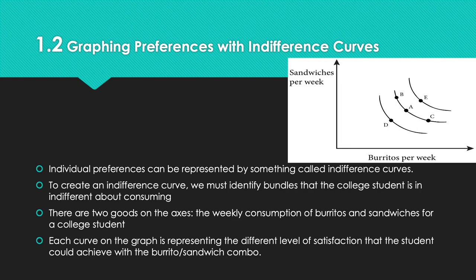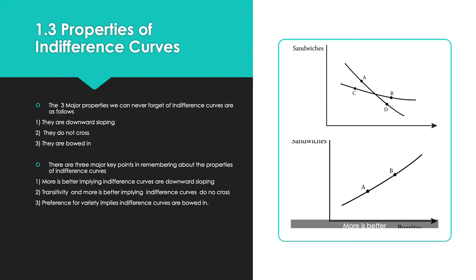Section 1.3 covers properties of indifference curves. There are three major properties we must never forget: indifference curves are downward sloping, they do not cross, and they are bowed in.